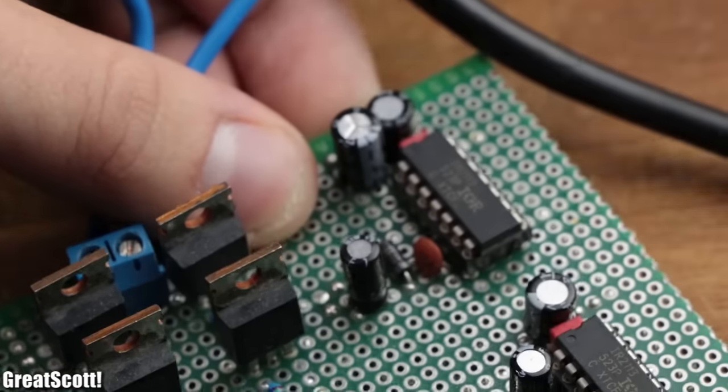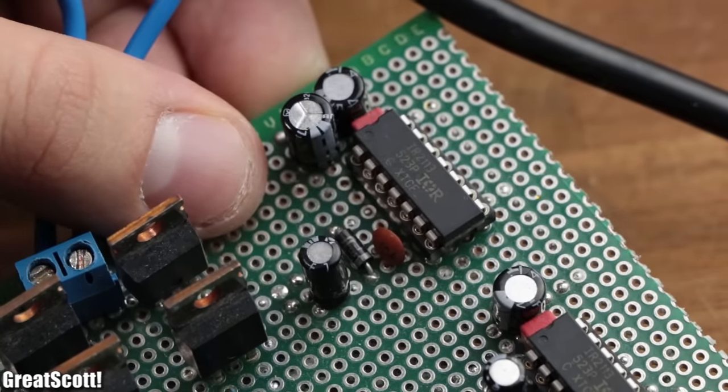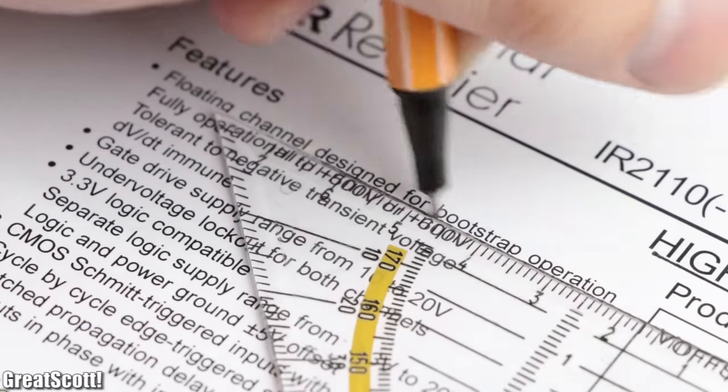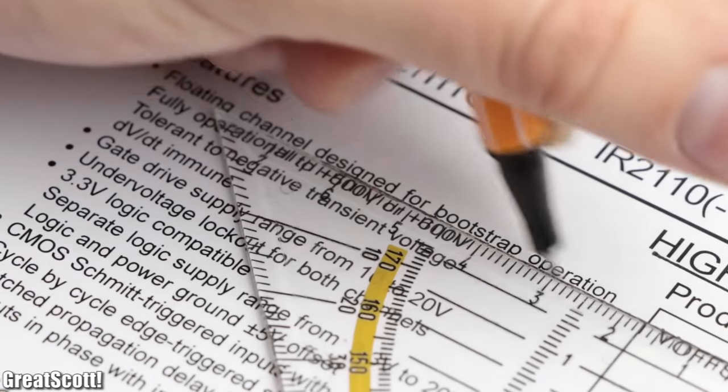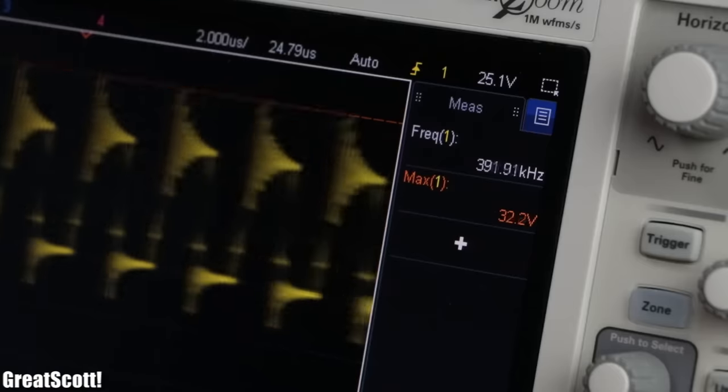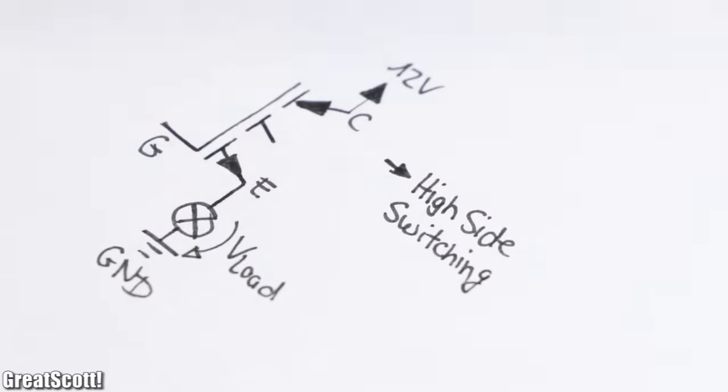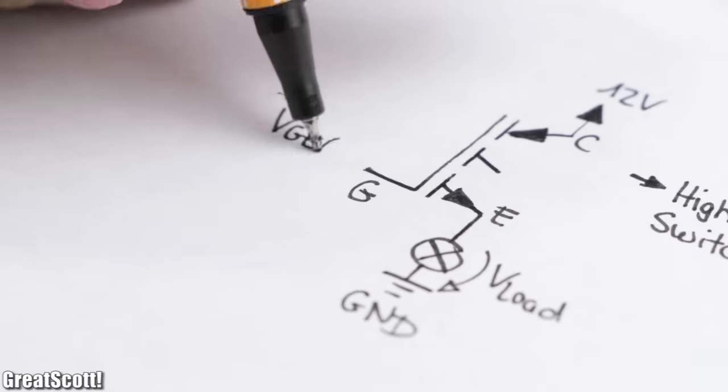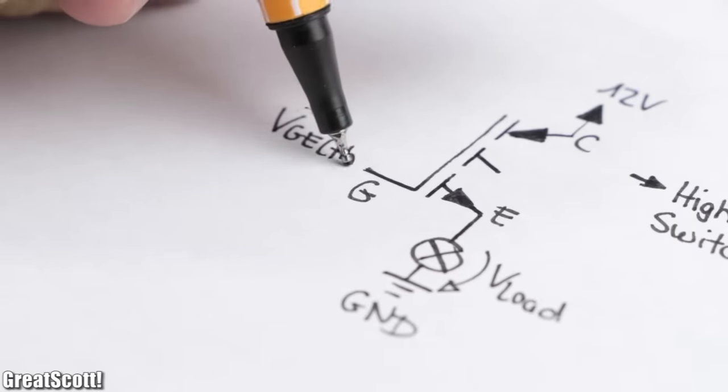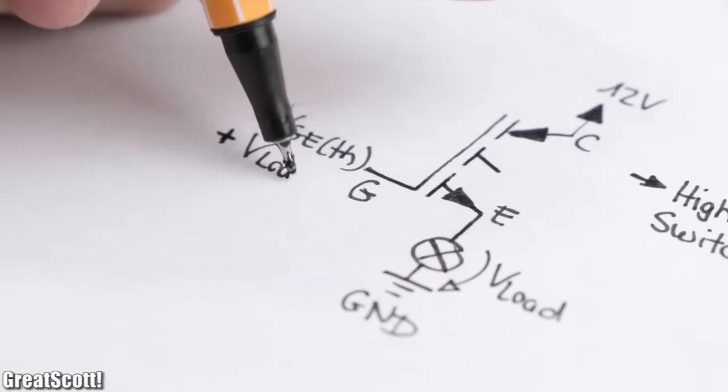But not only that, driver ICs like the IR2113 can also be used for bootstrap operation and thus can provide the mandatory higher gate voltage for high side switching IGBTs, which not only require the gate threshold voltage to turn on, but additionally the load voltage.